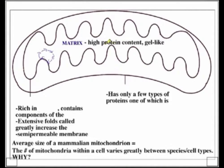There are a lot of proteins inside of the matrix, and it makes the consistency — if you picture yourself swimming through the matrix — really jello-y, really gel-like. It's very viscous because of all that protein found in there. Now let's work our way out and talk for just a minute about the inner membrane.